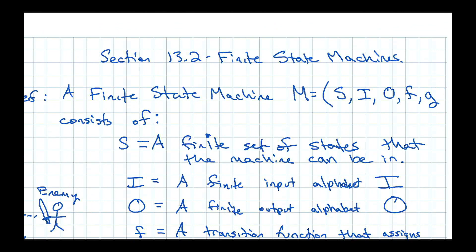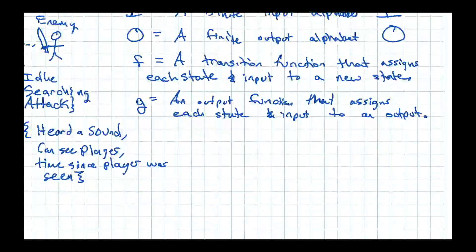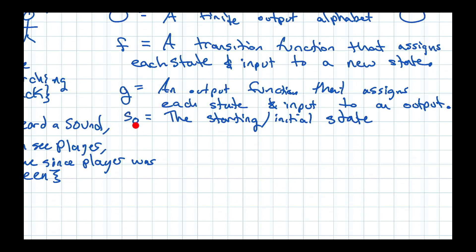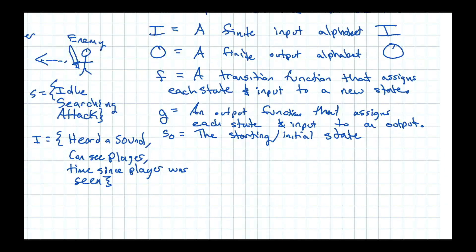There's one more component: the starting state, or initial state. When you start the finite state machine, what state are you in? Usually if your states are named s0, s1, s2, etc., they just make whatever they want the initial state to be s0, so you don't have to think hard about it.